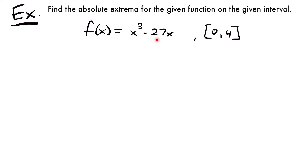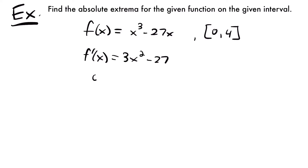How about the function x cubed minus 27x on the interval 0 to 4? Where are our absolute extrema on this function? Let's start by taking its derivative. We'll have f prime of x is equal to 3x squared — using our power rule — and then negative 27, since the derivative of negative 27x is just negative 27.